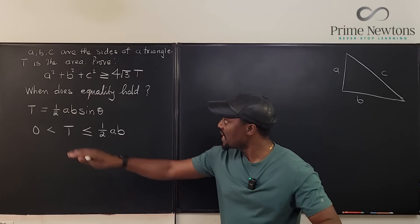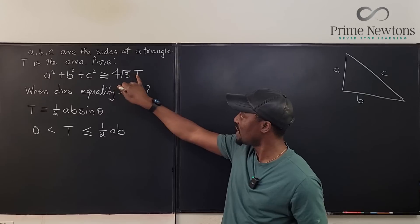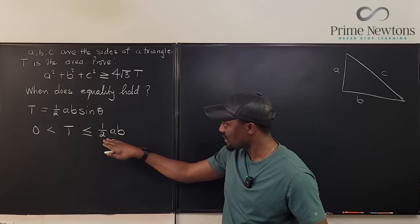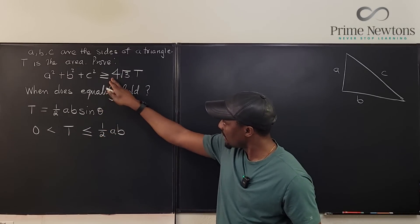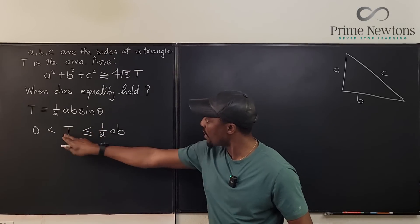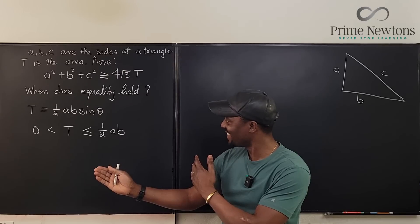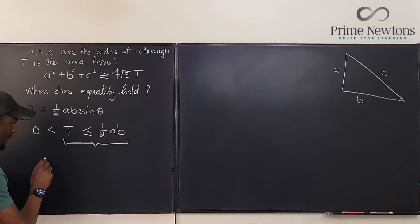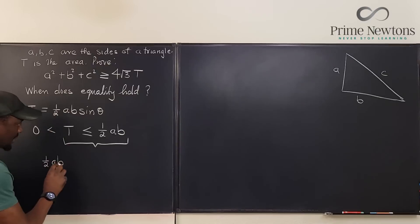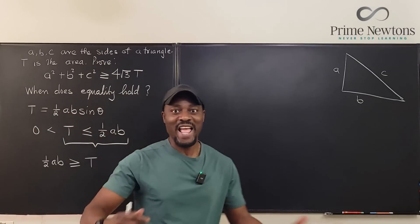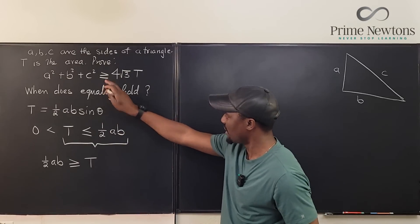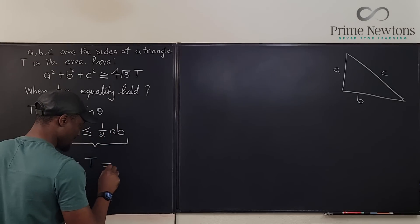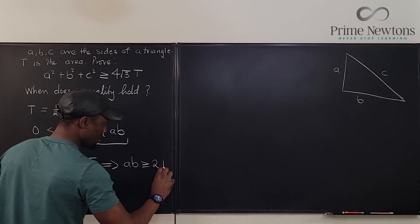The mission is to find A squared plus B squared plus C squared being greater than 4 rad 3 times T. We've gotten a representation for T. We know that T is a positive value. Half AB will be greater than or equal to T. We can now start adding to this. I'm going to multiply both sides by two, which implies that AB is greater than or equal to 2T.